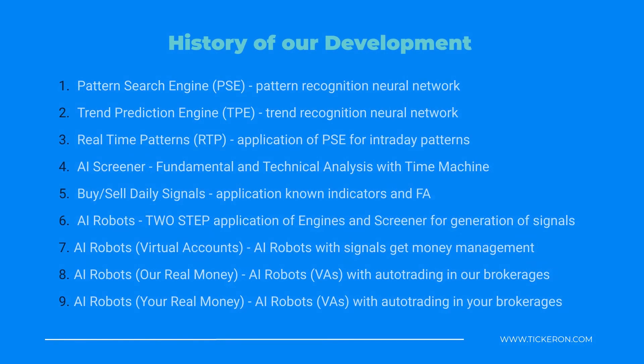Our journey began with a pattern search engine, evolved into real-time pattern recognition, and further advanced with a combination of fundamental and technical analysis through our AI screener and time machine. We responded to your requests for insights into our trading methods and introduced the two-step approach — screening for good stocks and trading them using various strategies — resulting in the creation of our first robots, the Signal's Omen. Virtual accounts followed, and soon we'll connect real money to virtual accounts.